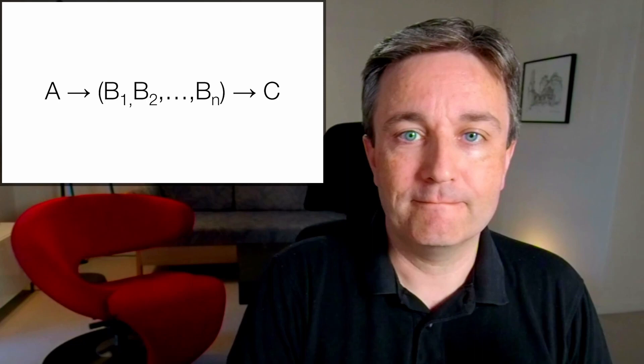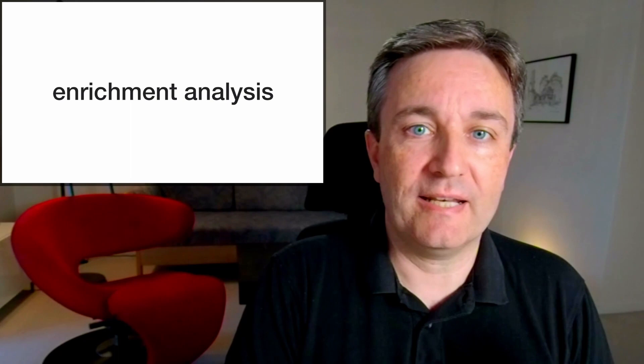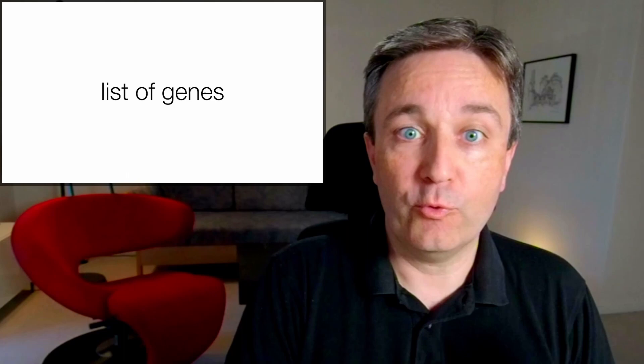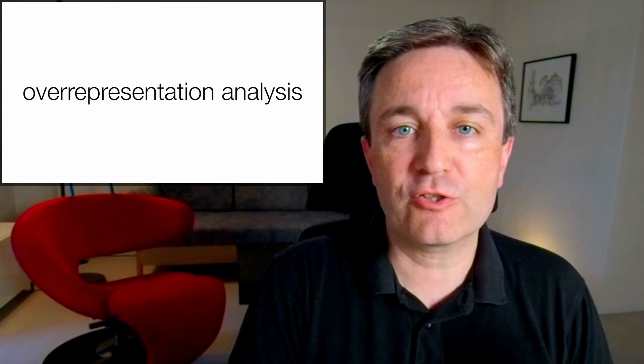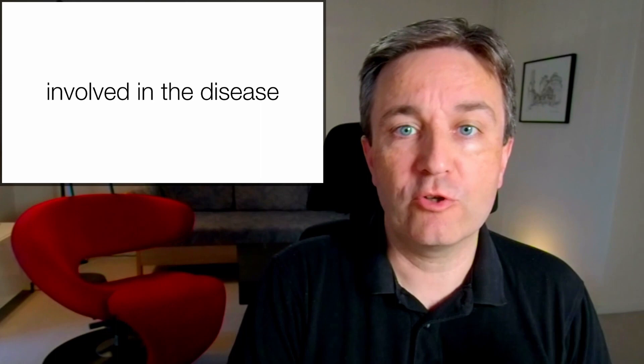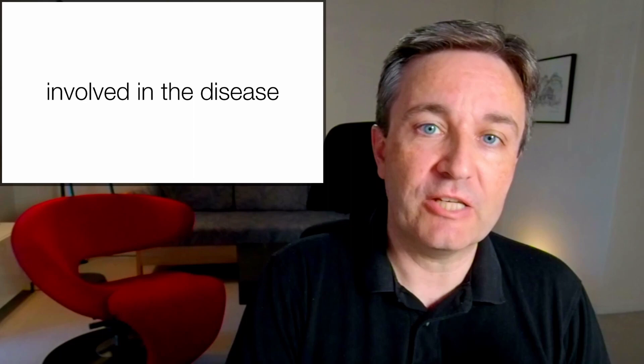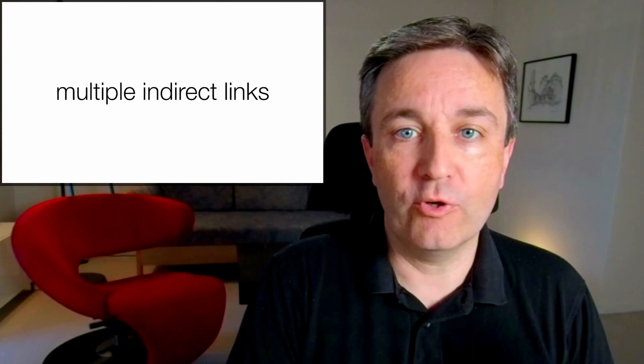Another way of doing network-based discovery is enrichment analysis. Imagine that you're starting from a disease of interest and you've performed a genome-wide association study or a transcriptomic study. In either case, you end up with a list of genes. You now do geneset enrichment analysis or over-representation analysis to discover pathways that contain many of the genes that you already found to be involved in the disease. That is, you found an indirect link between the disease and the pathway. This is equivalent to doing an open search looking for multiple indirect links.